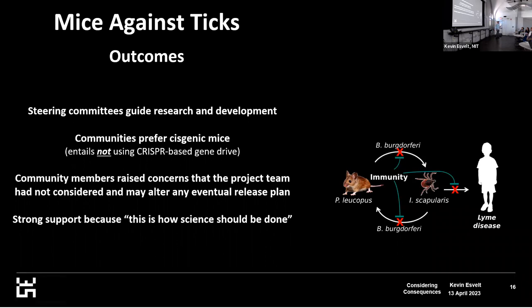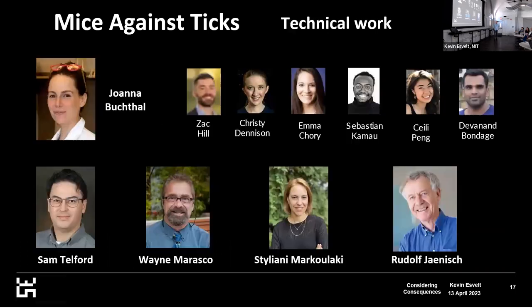On Chappaquiddick, the sub-island of Martha's Vineyard, the homeowners association met without our knowledge. There was an MIT alum who owns a house there, knew about our project, and independently proposed that the Chappie Homeowners Association support the project and volunteer Chappaquiddick as an early field trial site — which the federal regulators would never in a million years allow. Nevertheless, it passed by over 100 to zero — zero votes against genetically engineering the wild mice on Chappaquiddick. This might have been due to the fact that the charismatic president of the association had just recovered from Lyme disease, but even so, that's quite a difference from how these things have historically gone.